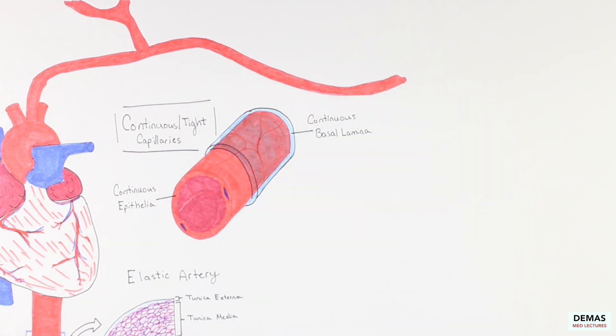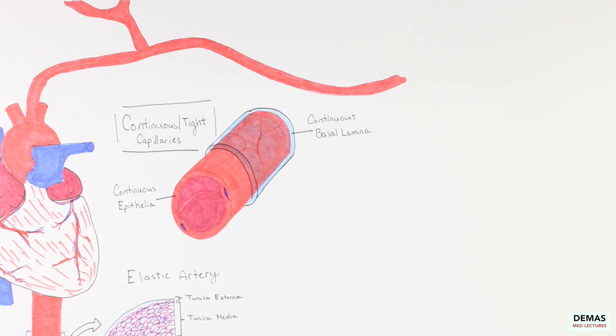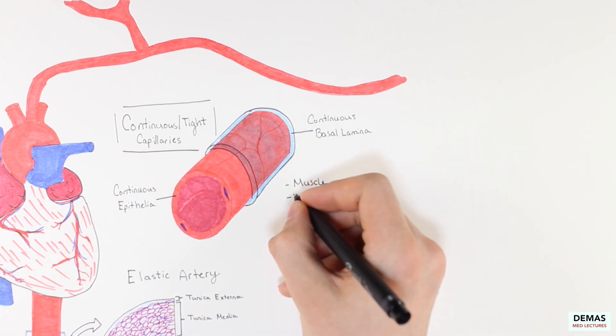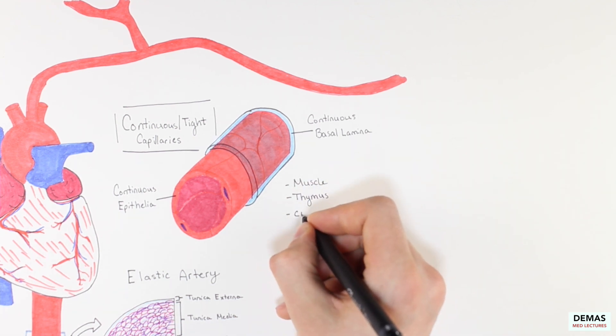These capillaries are found in areas of the body where exchange from the blood needs to be tightly regulated. Some examples of where continuous capillaries are found are in the skeletal muscles, the thymus, and the central nervous system, such as the brain.